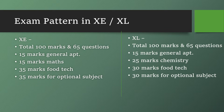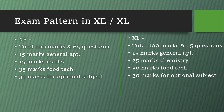The exam pattern is similar in both XE and XL: 100 marks and 65 questions in each paper. However, the marks distribution differs. In XE, 15 marks go to General Aptitude, 15 marks to Mathematics, and 35 marks each to Food Technology and the optional fourth subject. In XL, 15 marks go to General Aptitude, 25 marks to Chemistry, and 30 marks each to Food Technology and your chosen optional subject.